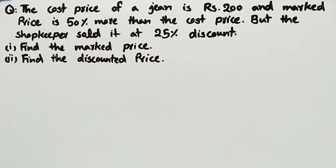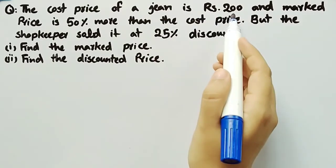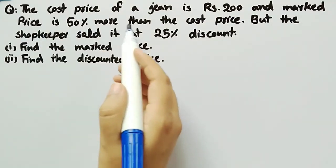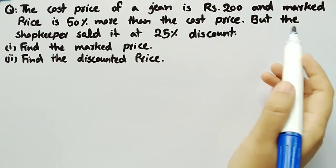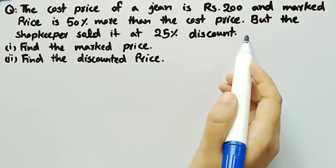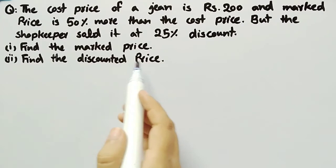In this video, we will discuss a word problem related to marked price and discounted price. The problem states that the cost price of a jean is Rs. 200 and marked price is 50% more than the cost price. But the shopkeeper sold it at 25% discount. We have to find the marked price and the discounted price.